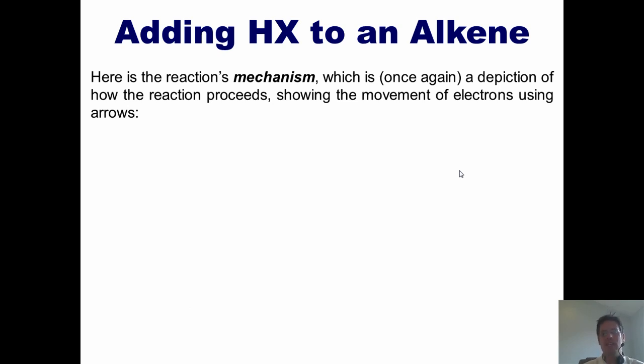Here's the reaction's mechanism, which once again is a depiction of how the reaction proceeds, showing the movement of electrons using arrows. Here's the alkene. What in the world happens? Well, these electrons, the pi electrons right here being shared between these carbons that are doubly bonded to each other, flip out like a door on a hinge. And you can imagine if the hinge were right here and this door flipped out, it forms a bond with this hydrogen. And as these electrons come in and grab this hydrogen, it breaks the bond here and thrusts these two electrons up onto the chlorine or bromine.